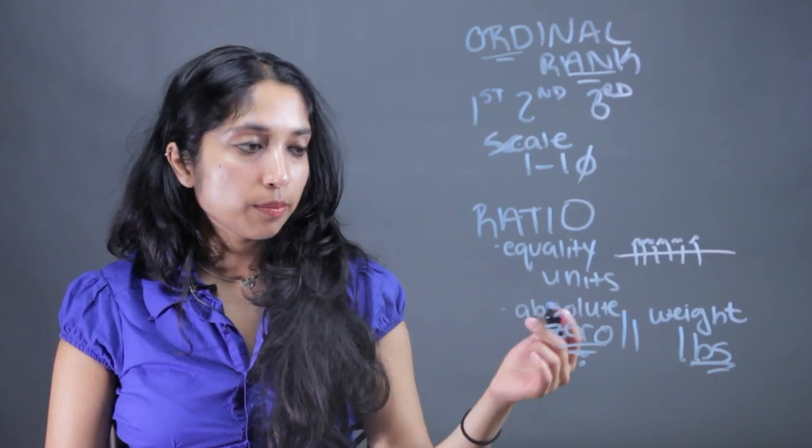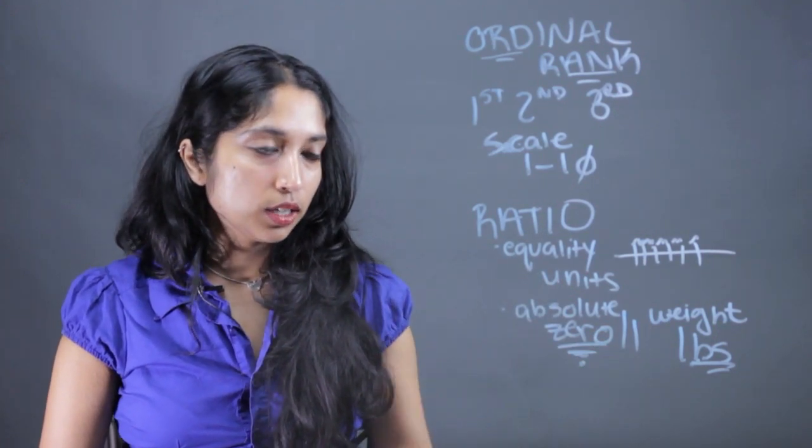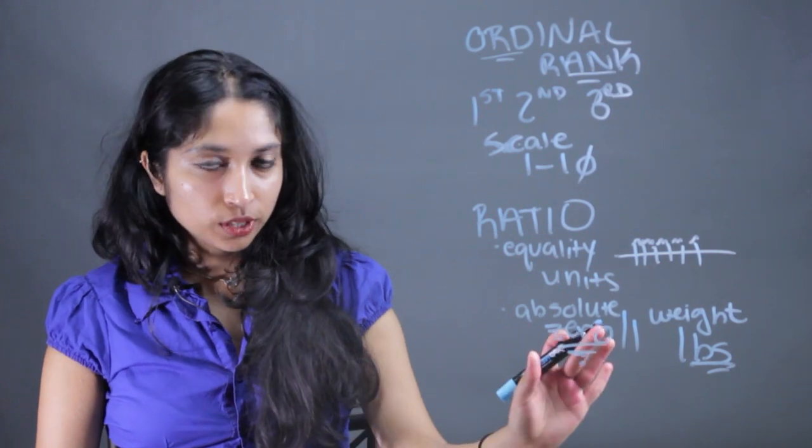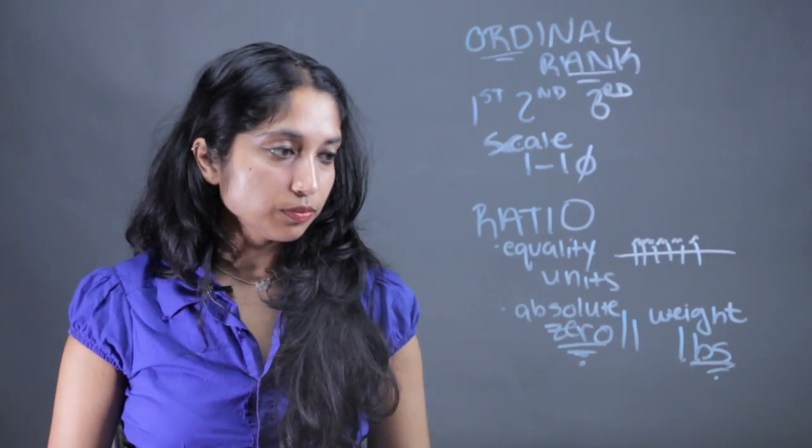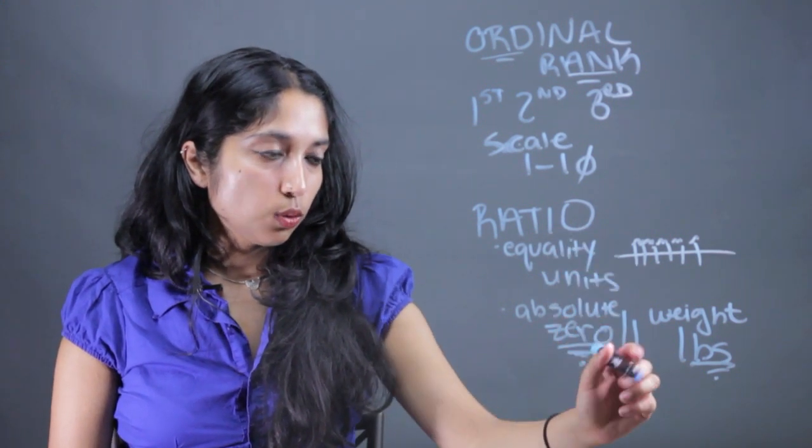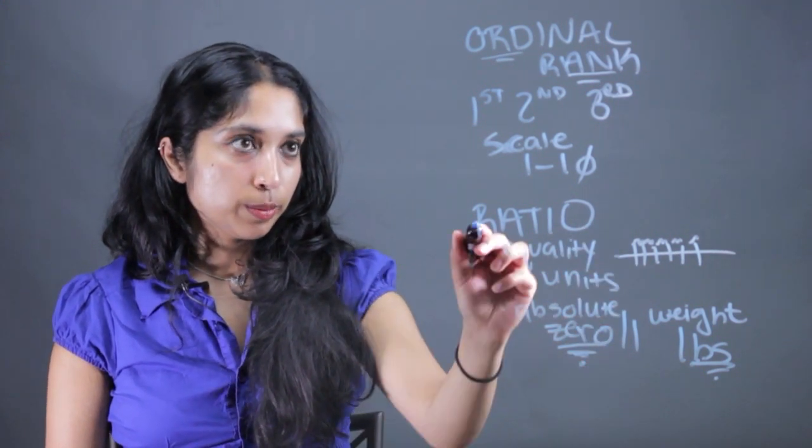So something like pounds, something like distance. Like you can't go excluding directional components. You can't travel a negative distance. And those are the two qualifications you would need for a ratio measurement.